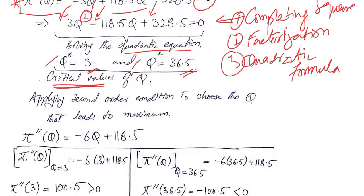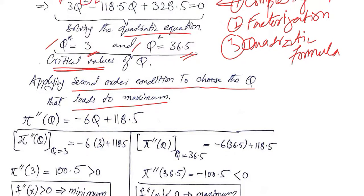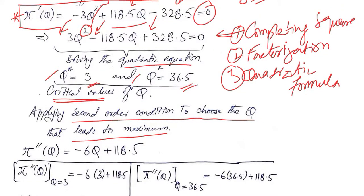In order to find out which critical value leads to a maximum and which leads to a minimum, we are going to use both of them in a substitution process — applying the second order condition to choose the q that leads to maximum. The second order condition requires that we take the derivative of the first order derivative. This is the first order derivative from which we find the second order derivative.